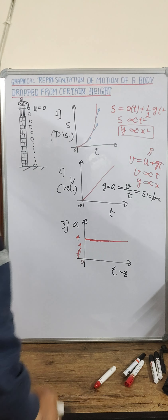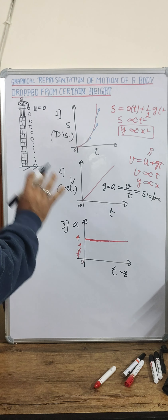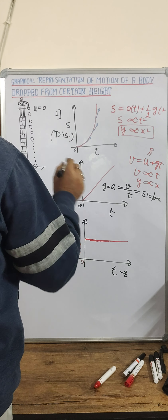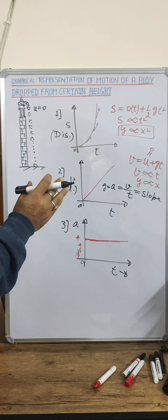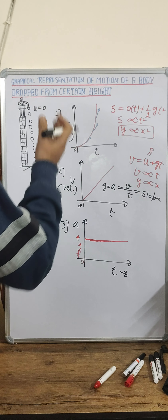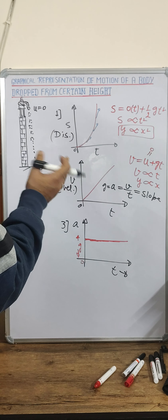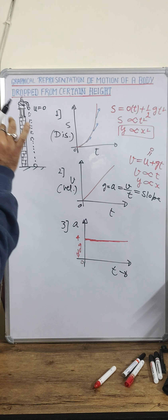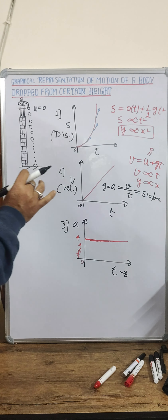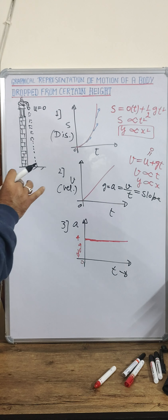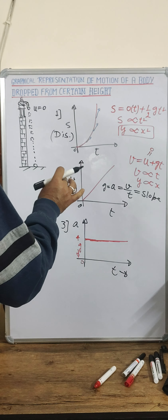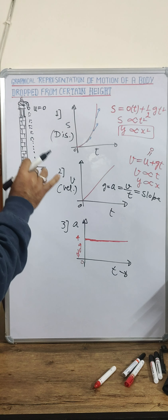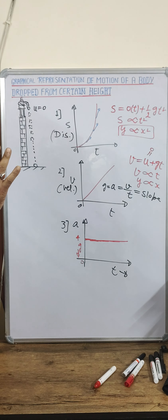So in this video, we discussed the three graphs for a body dropped from a height: the displacement-time graph, the velocity-time graph, and the acceleration-time graph. Thank you, students.